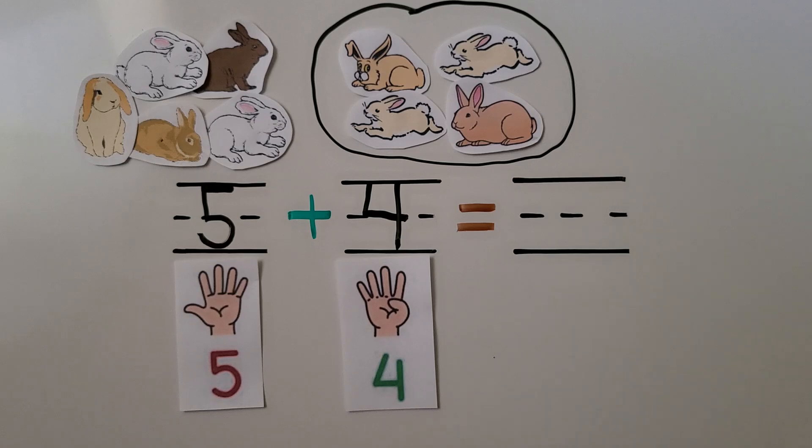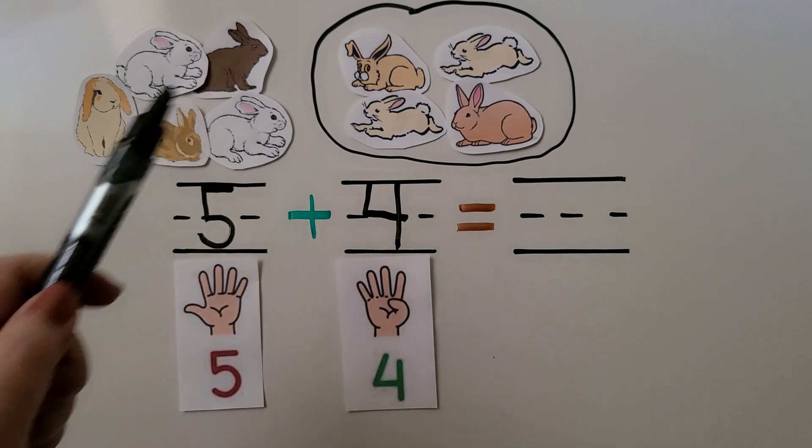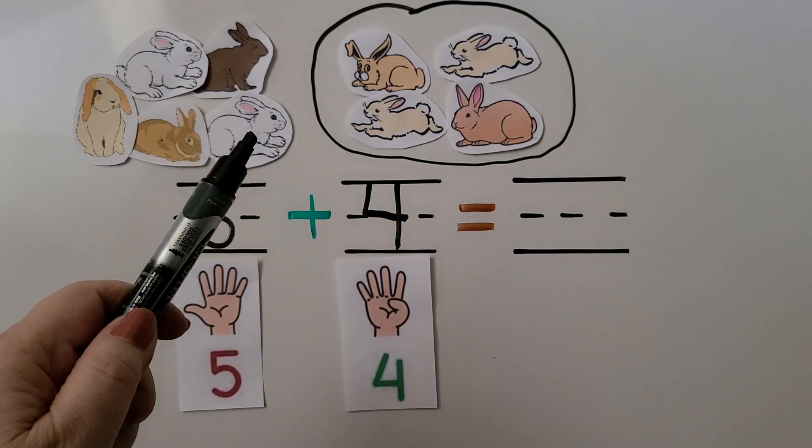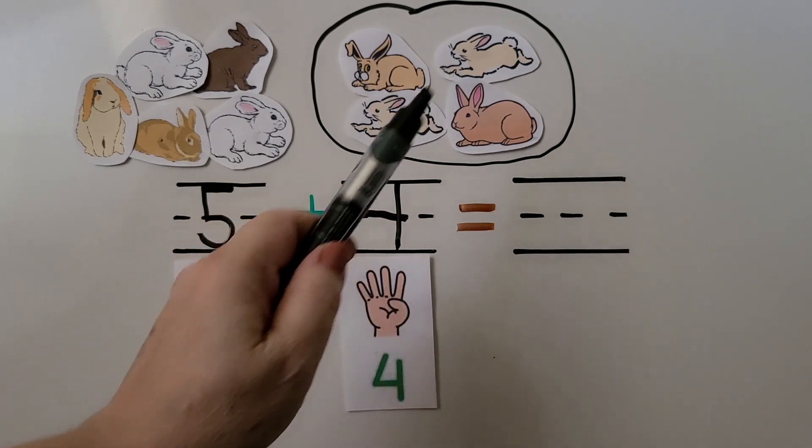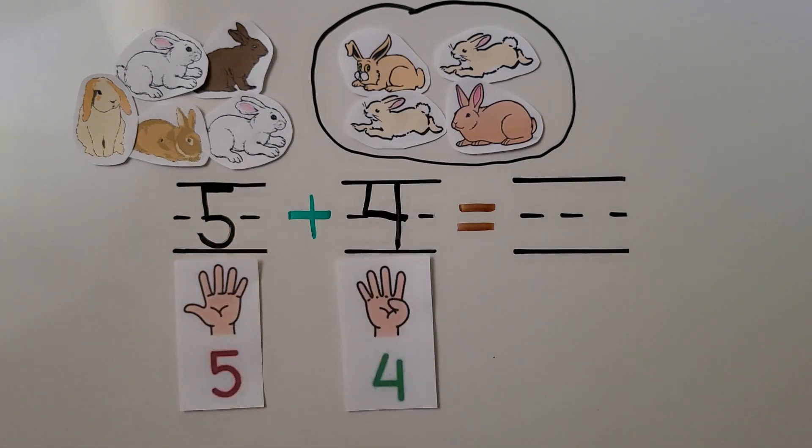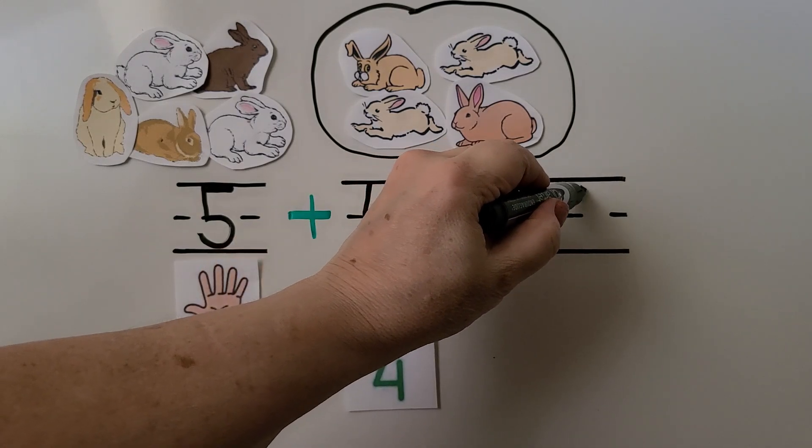So how many rabbits are there now? We can count one, two, three, four, five, six, seven, eight, nine. There's nine rabbits now. We can write the nine.